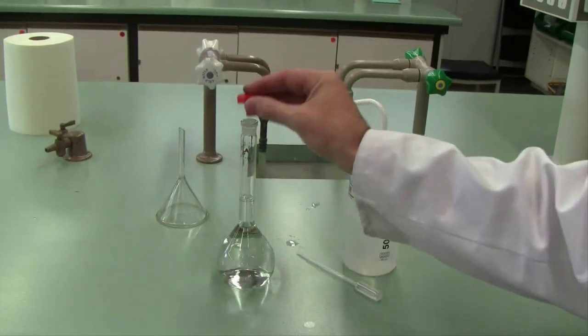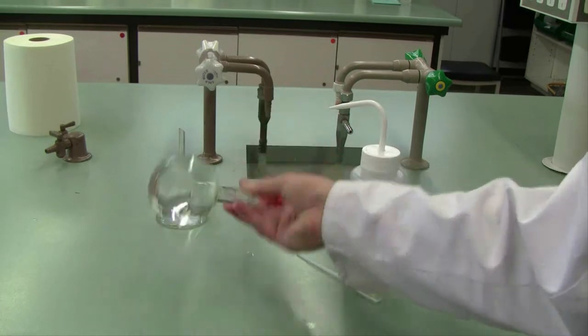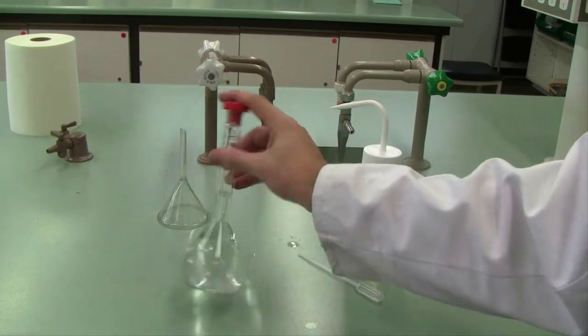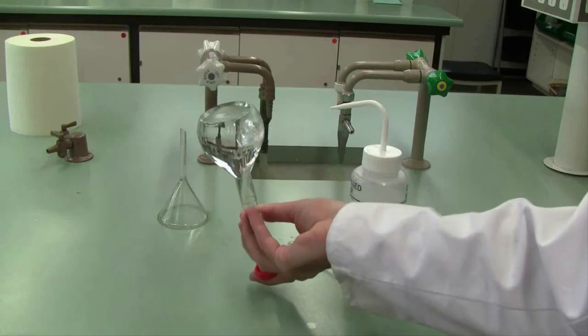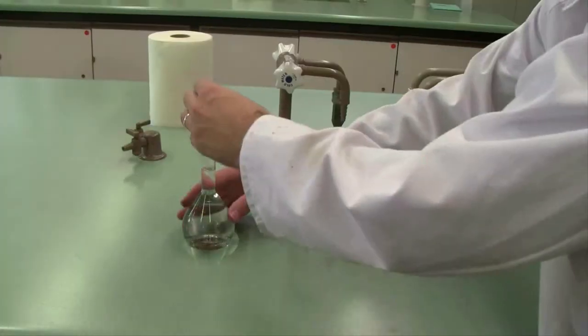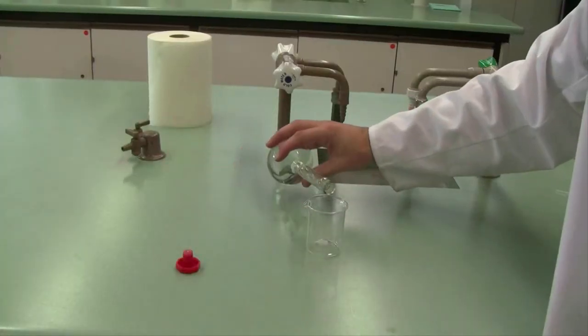Once you've done that, you can cap your standard flask and then we mix thoroughly by inversion. So we invert at least 40 times to ensure that the composition of the mixture is exactly the same all the way throughout.